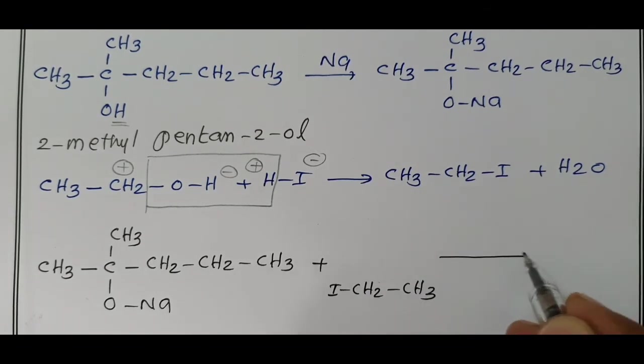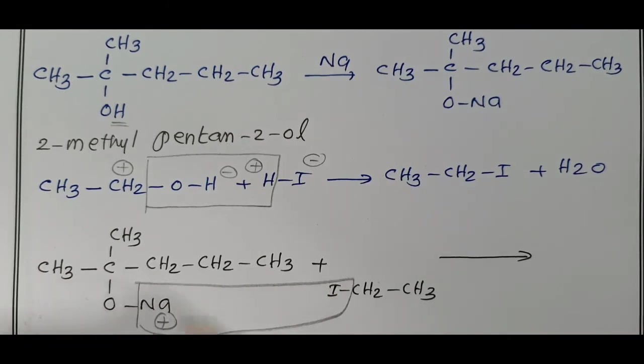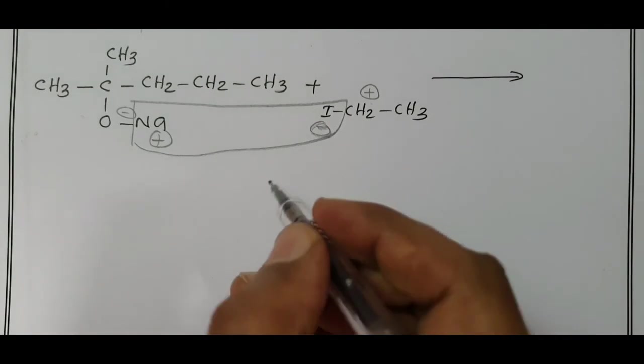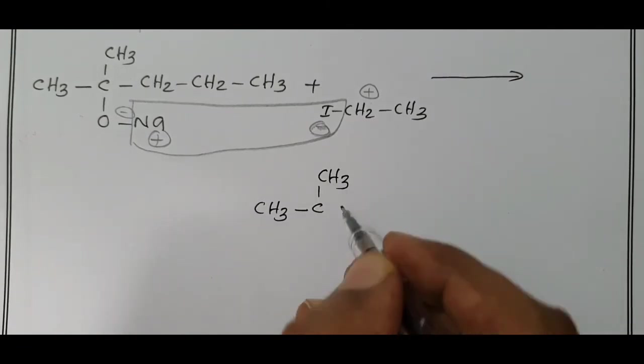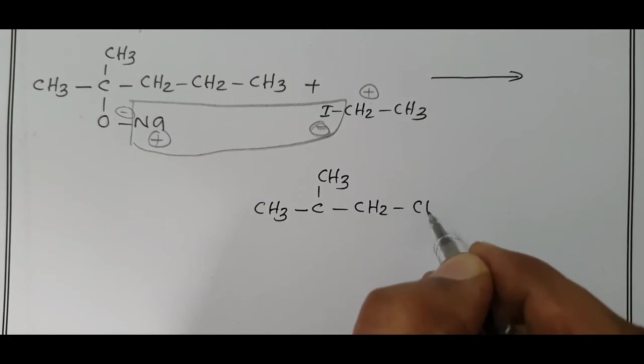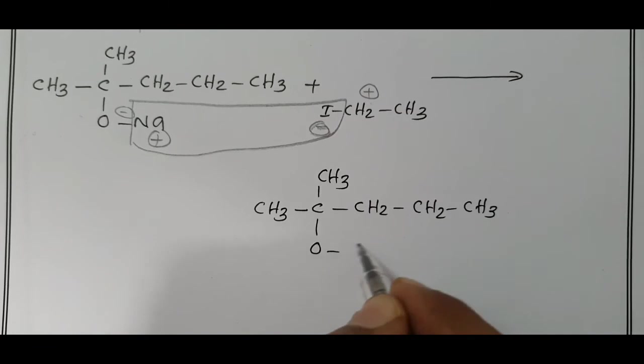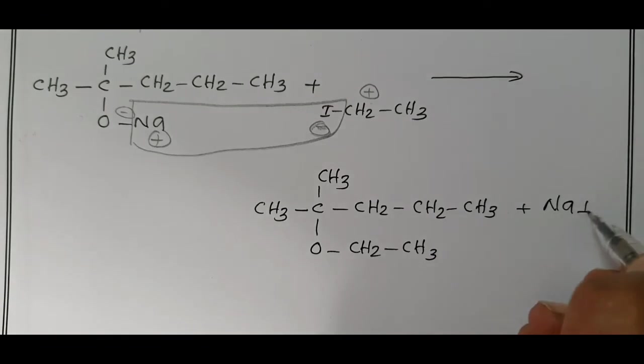Gives, which one is removed, Na plus and I minus, removed as NaI, ethyl plus is added to O minus, gives our required product. Now, write the product, CH3, CH3, here you have CH2, CH2, CH3, O-CH2, CH3, with the loss of sodium iodide, NaI.